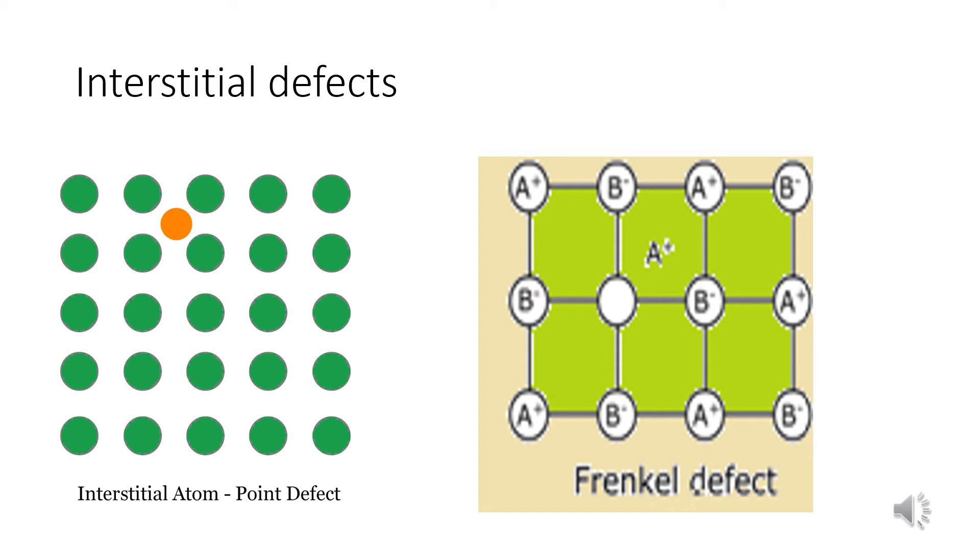Here example is Frenkel defect. The Frenkel defect is shown by ionic solids. The smaller ion, usually cation, is dislocated from its normal site to an interstitial site. It's here defect at its original site and an interstitial defect at its new location. So, Frenkel defect is also known as dislocation defect.